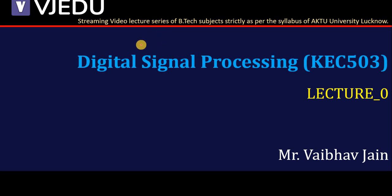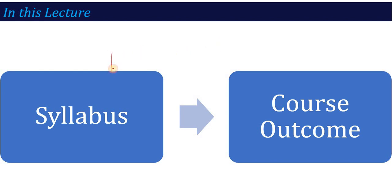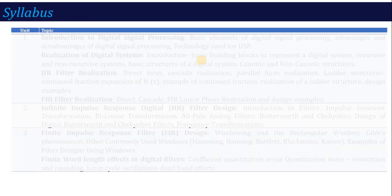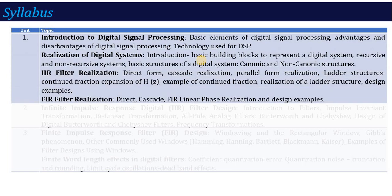Hello everyone, welcome to the video lecture series of Digital Signal Processing. The subject code is KEC 503 and this is Lecture 0, where we will discuss the syllabus and respective course outcomes. Starting with the syllabus, this is a full credit course containing 5 units. Unit 1 covers the introduction to Digital Signal Processing — what DSP is about, basic ideas and introduction.